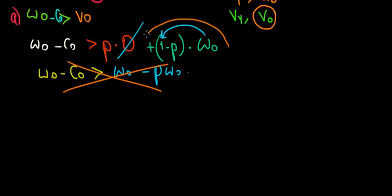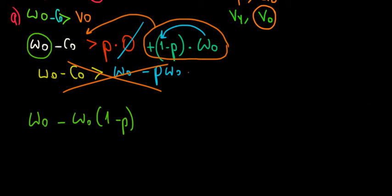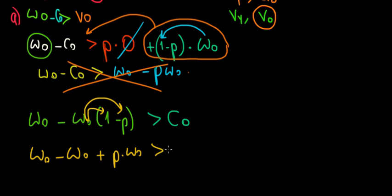We'll just take the term with the wage of the old worker to the other side because we want to keep the terms that we're interested in on one side only. So we will have WO minus WO times 1 minus P must be greater than the cost of effort. Now we can open the brackets and we would have WO minus WO times one is WO, so minus WO times minus P becomes plus P times WO must be greater than the cost of effort.